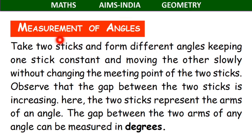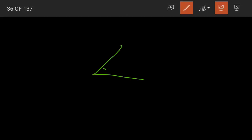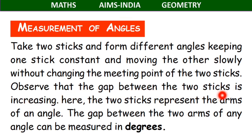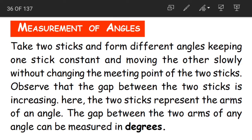Now let us look at how to measure these angles — measurement of angles. When two lines meet like this, this will be an angle. So how do we measure this angle? Take two sticks and form different angles. Keeping one stick constant and moving the other slowly without changing the meeting point of the two sticks, observe that the gap between the two sticks is increasing. Here the two sticks represent the arms of an angle.